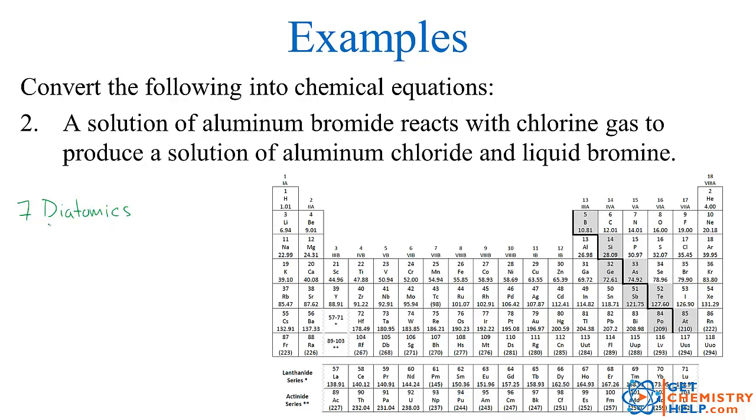They're called that because they always appear with diatoms, so two atoms. So those seven diatomics are over here. They're nitrogen, oxygen, fluorine, chlorine, bromine, and iodine. So whenever any of these elements appear by themselves in nature, plus hydrogen.